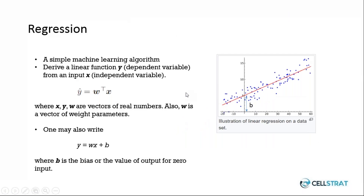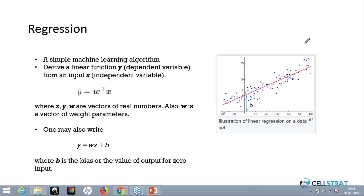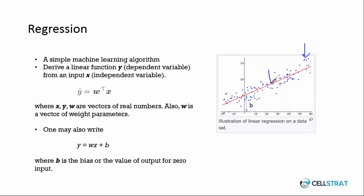The blue dots are the input to the model training process. The equation of the red line is the output. In traditional data analytics or software engineering, we would need to know the equation of the line and then predict the blue dots. In machine learning, it's reversed: the blue dots are the input, and the equation is the output. Machine learning is the opposite of analytics in that sense — the equation is the output, not the input.